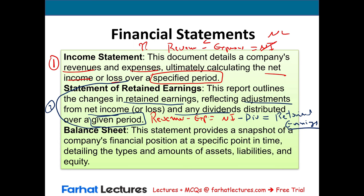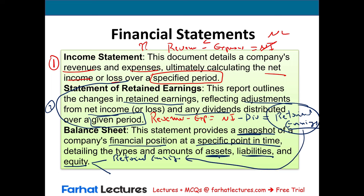The third financial statement is the balance sheet. The balance sheet is a snapshot of the company's financial position for a specific point in time — not a period of time. The balance sheet lists our assets, liabilities, and equity. There are two parts of equity: retained earnings, which we already computed, and common stock, also called contributed capital — what the investors invested in the company. We prepare the statements in order because we need net income for the statement of retained earnings, and we need retained earnings to fill in the balance sheet.